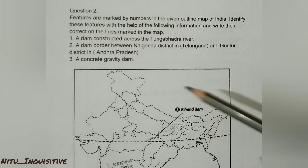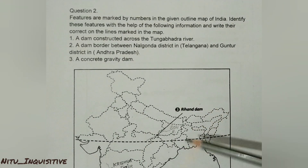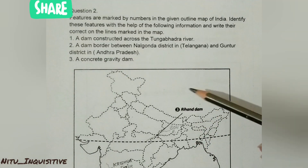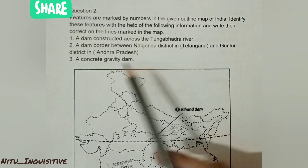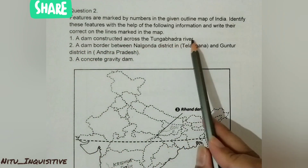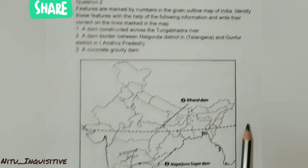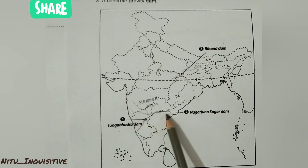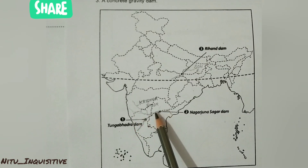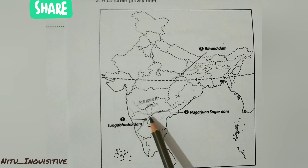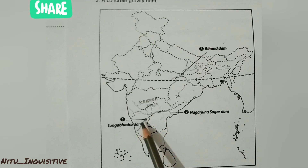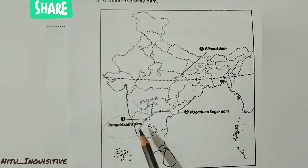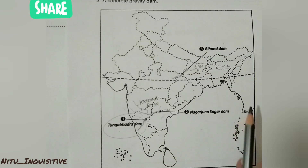The next type of question has certain features marked by numbers like one, two, three, four, and you have to identify these features using the information given in the question paper. The first question is: a dam constructed across the Tungabhadra River. We have the Krishna River here, and Tungabhadra is one of its tributaries. On the Tungabhadra River there is Tungabhadra Dam, also known as Pampa Sagar.